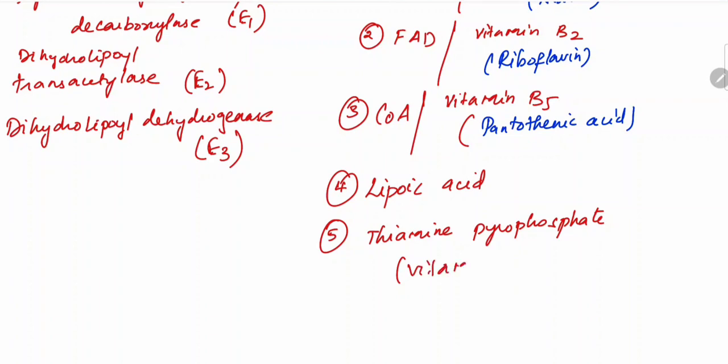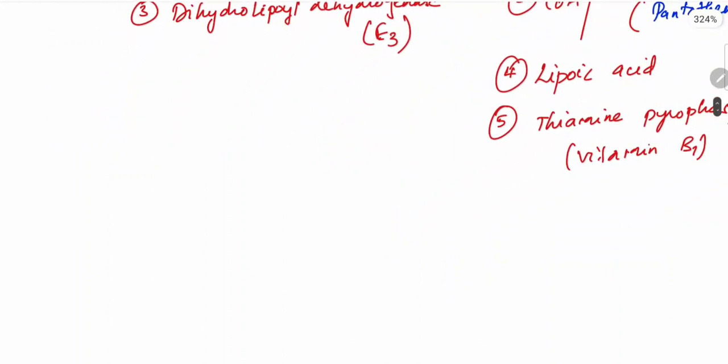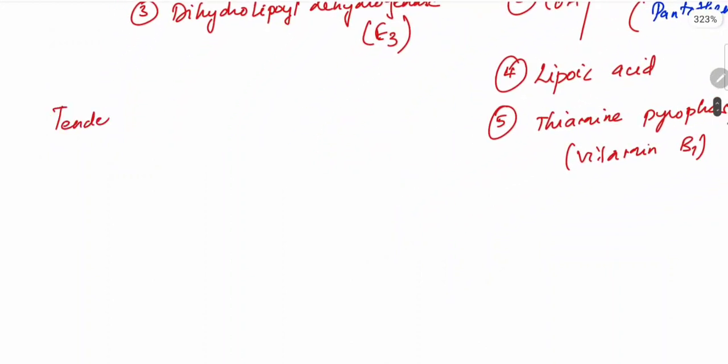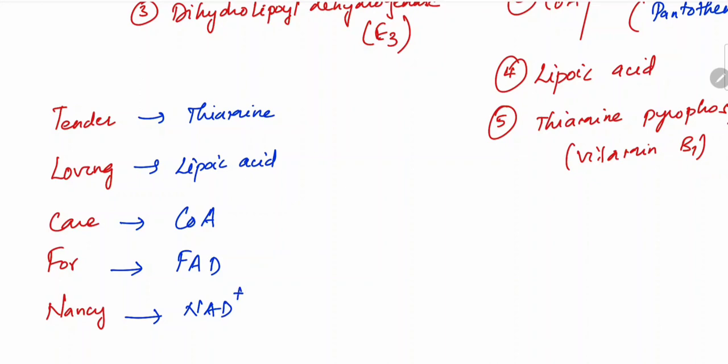The mnemonic for the cofactors is 'tender loving care for Nancy.' Tender stands for thiamine, loving stands for lipoic acid, care stands for coenzyme A, for stands for FAD, and N stands for NAD+.